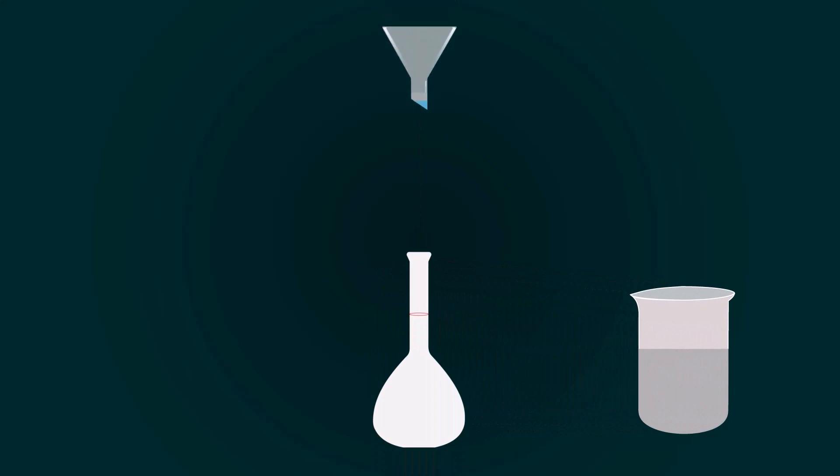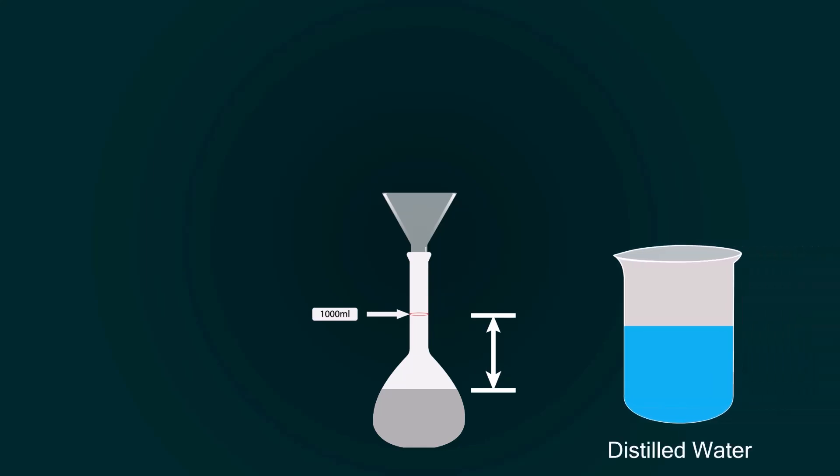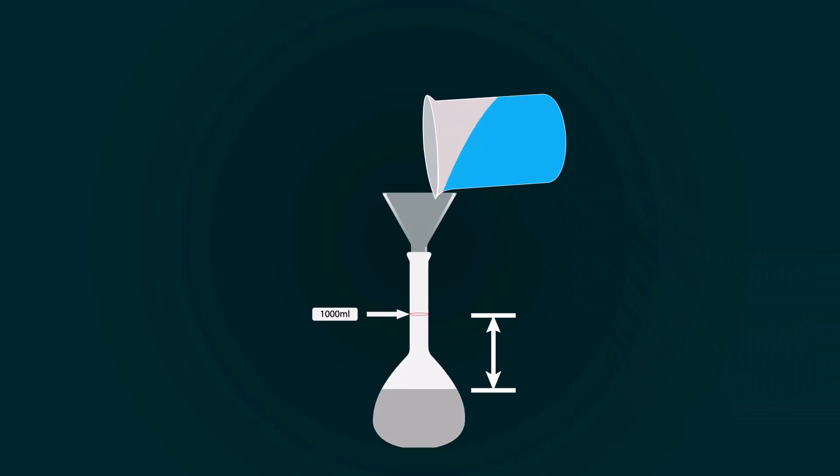Now pour all the solution into the volumetric flask with the help of the funnel. You have to fill the volumetric flask up to the thousand milliliter point, for that you have to add more distilled water. Take more distilled water into an empty beaker and start pouring it into the volumetric flask.